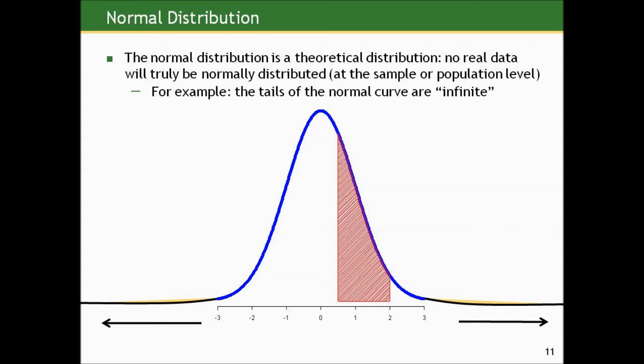So no real data is truly normally distributed at the population level, but many times it's a good approximation or the data approximates a normal curve. We can use some nice properties of the normal curve to make statements, which we'll get into in the next few sections.